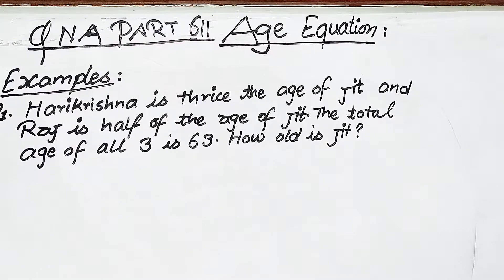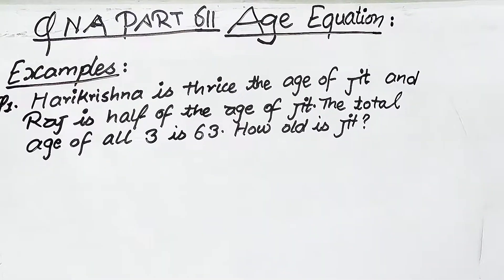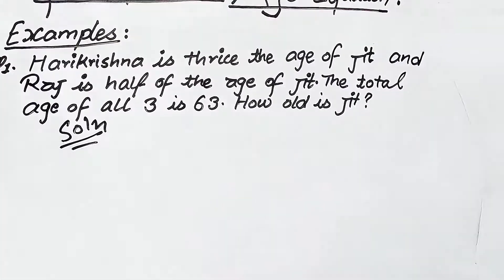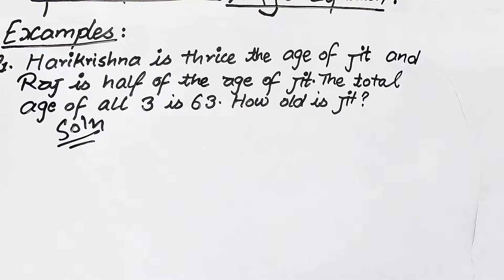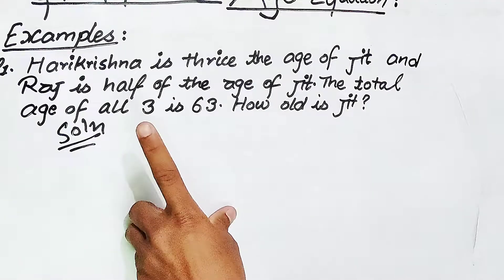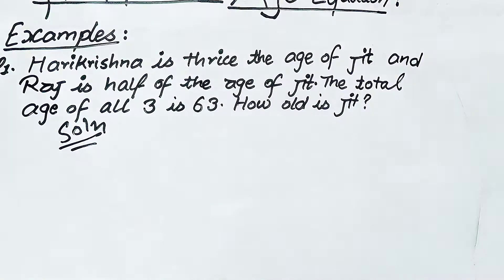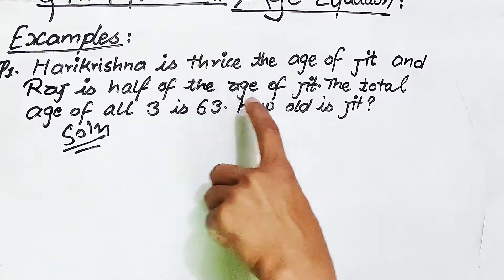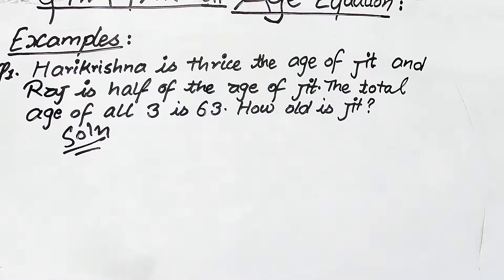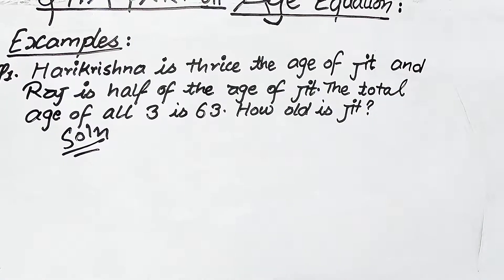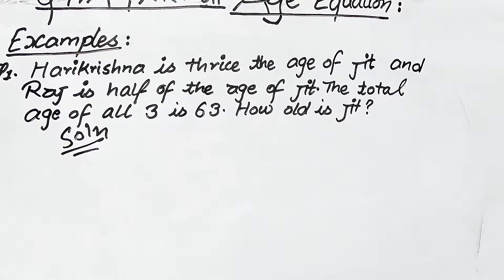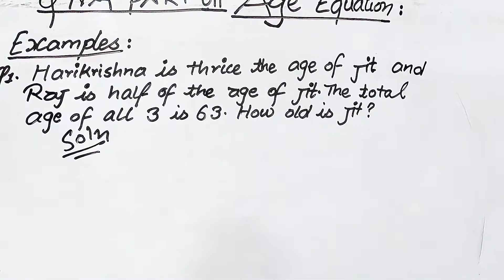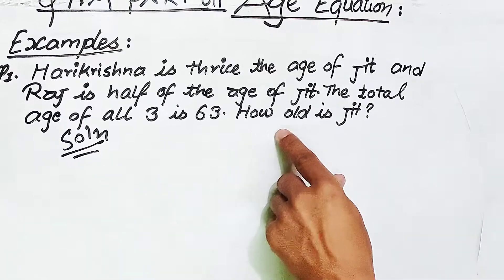I will show you the first example of Qn bar 6 equation. I will try to solve the math of Zheed. The total age of all 3 is 63. They only have 63 — how old is Zheed?